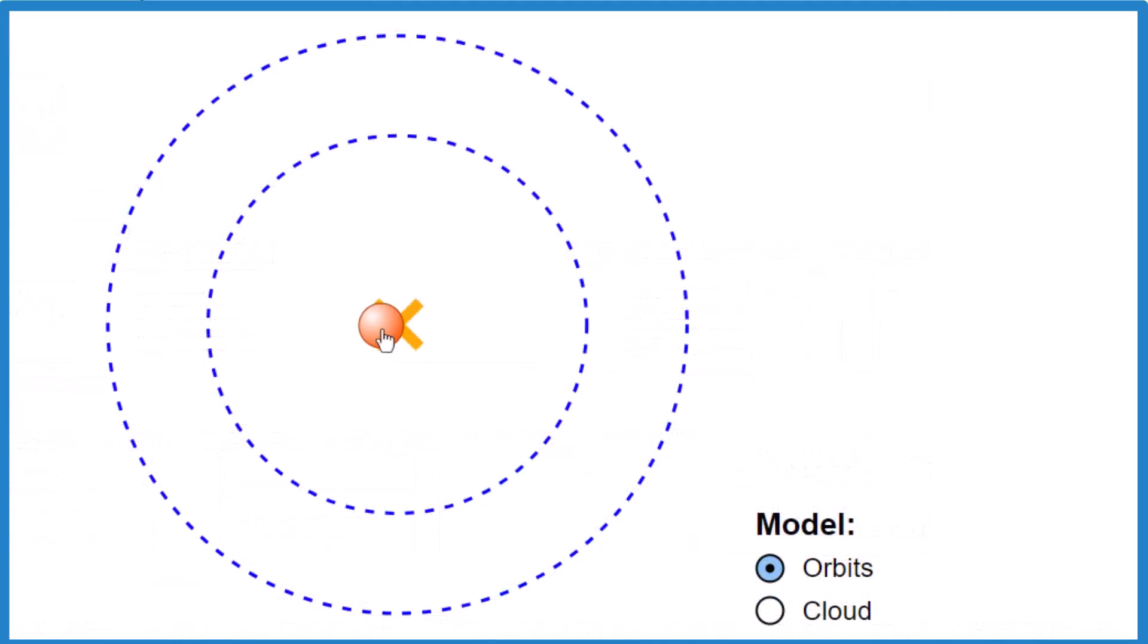We put our 1 proton in the nucleus, and then we have 1 electron. It's in this energy level here, the first energy level. In the first energy level, it can only hold 2. After 2, it goes to a new energy level.